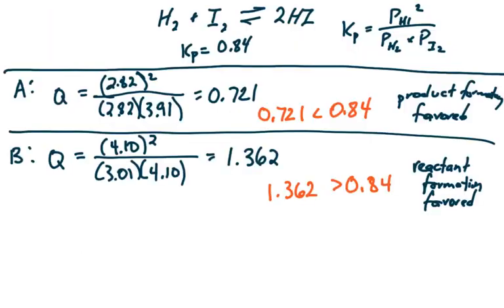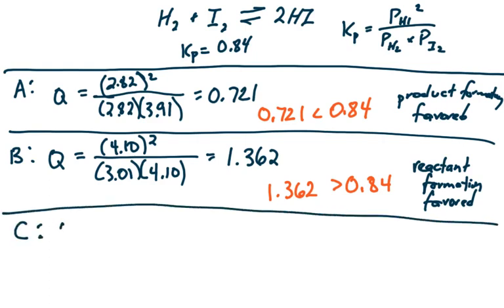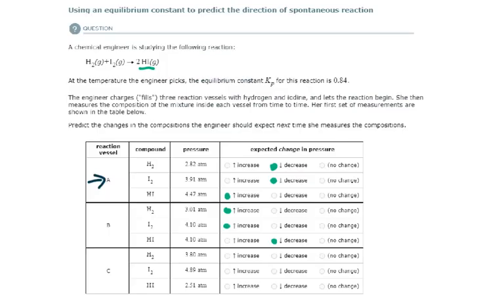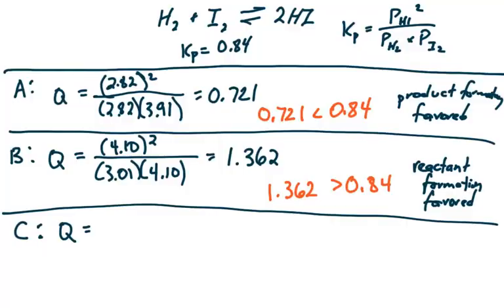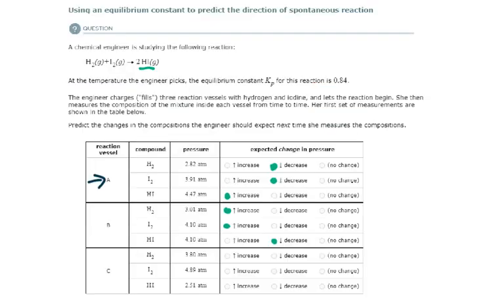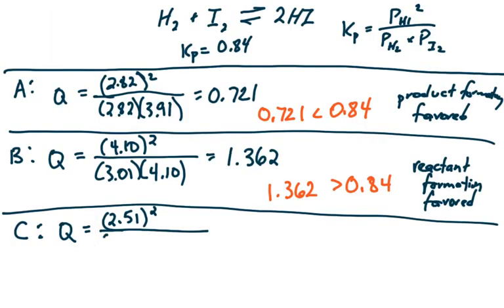Now let's check C. Let's find the reaction quotient for reaction vessel C. Concentration of HI is 2.51, 2.51 squared, divided by 3.8 times 4.89, 3.8 times 4.89. And what do we get? In this case, we get 0.34.